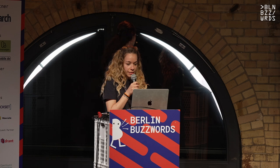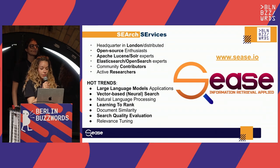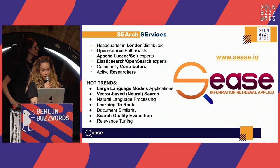Our headquarter is in London, but we are actually distributed worldwide. First of all, we are open source enthusiasts. Whenever we have time, we contribute back, mostly on the PyLucene and Solr projects, for which we are experts, and we also give consultancy to Elasticsearch and OpenSearch. We are also active researchers on many topics. We have published a paper at the European Conference of Information Retrieval. We work on hot trends like large language model applications, vector-based search, natural language processing, learning to rank, document similarity, search quality evaluation, and relevance tuning.